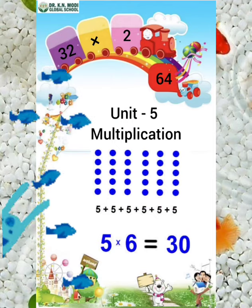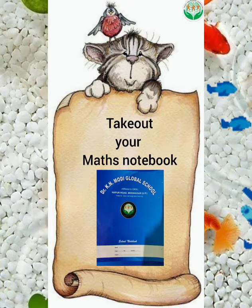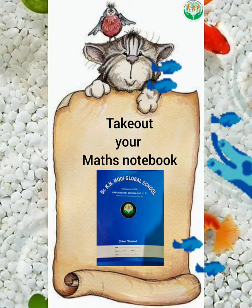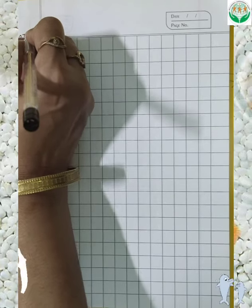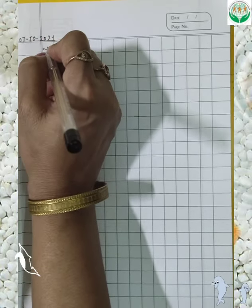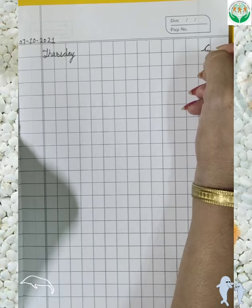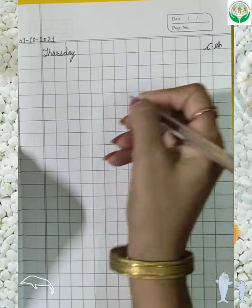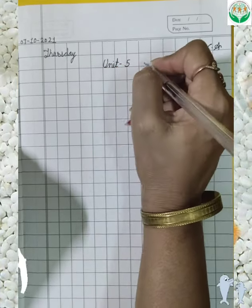Welcome to your math class. Today we will start a new concept: Unit 5, Multiplication. Everyone take out your math notebook, open it, write down the date — 7th October 2021, Thursday — and write down the heading: Unit 5, Multiplication. This is your classwork.